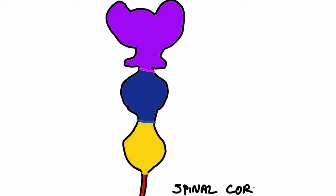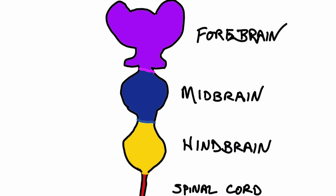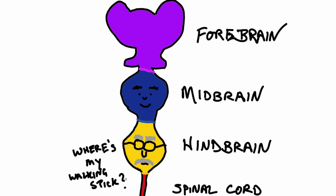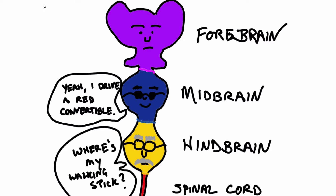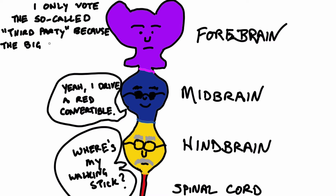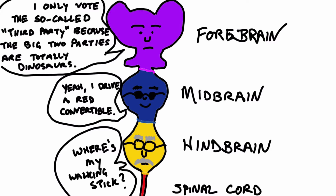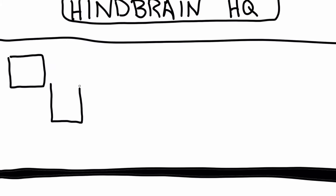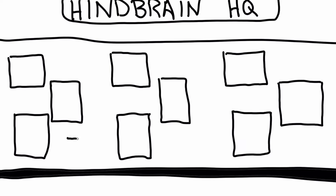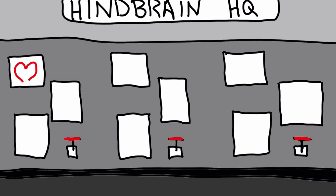Next, the hindbrain, the midbrain, and the forebrain are formed. Incidentally, this is the order of evolutionary advancement from the most primitive and universal among the natural world to the newest and most complex. The hindbrain goes on to become the upper portion of the spinal cord, the brain stem, and the cerebellum.